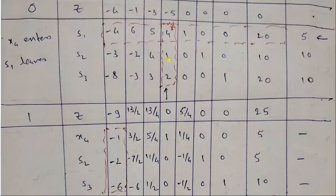Now, operation is for s2. Operation is s2 minus x4 because here it is 1. So 1 minus 1 is 0. s2 minus x4: minus 3 minus of minus 1 is minus 2. Minus 2 minus 3 by 2 is minus 7 by 2. 4 minus 5 by 4 is 11 by 4. 1 minus 1 is 0. 0 minus 1 by 4 is minus 1 by 4. 1 minus 0 is 1. 0 minus 0 is 0. 10 minus 5 is 5.